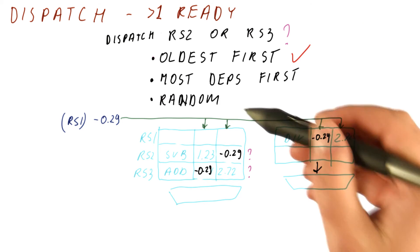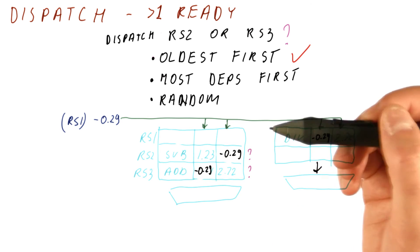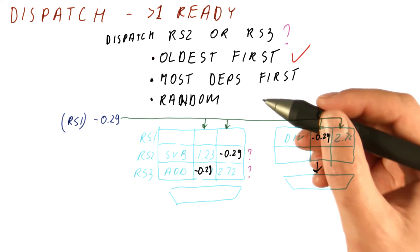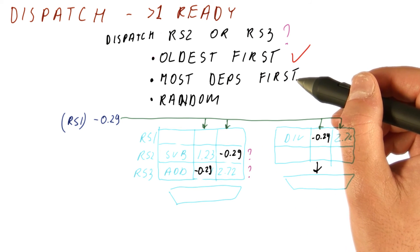Another choice would be to just randomly select the instruction. Like for example, whichever comes first in order of reservation stations or something like that. So something that has nothing to do with their age in the reservation station or whoever has most dependencies.